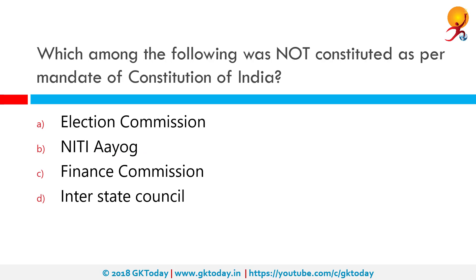Which among the following was not constituted as per the mandate of the constitution of India? The correct answer is NITI Aayog. NITI Aayog, like its predecessor the Planning Commission, is a non-constitutional, non-statutory body formed by a cabinet resolution.